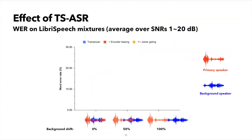To evaluate the performance of our proposed methods, we created synthetic mixtures from LibriSpeech with SNRs ranging between 1 and 20 decibel. We used the first two seconds of the utterance as the wake word segment. On the x-axis, we show three different evaluation conditions depending on when the background speaker starts speaking.